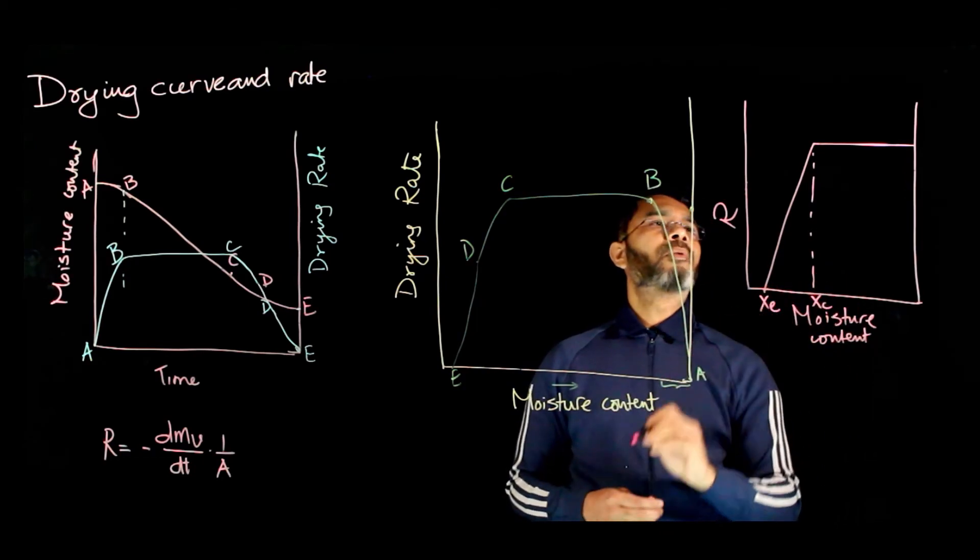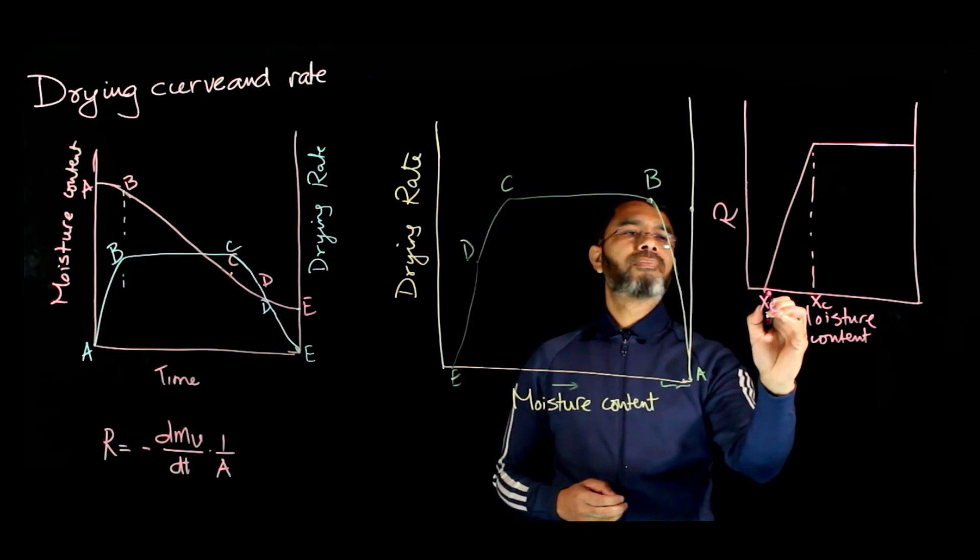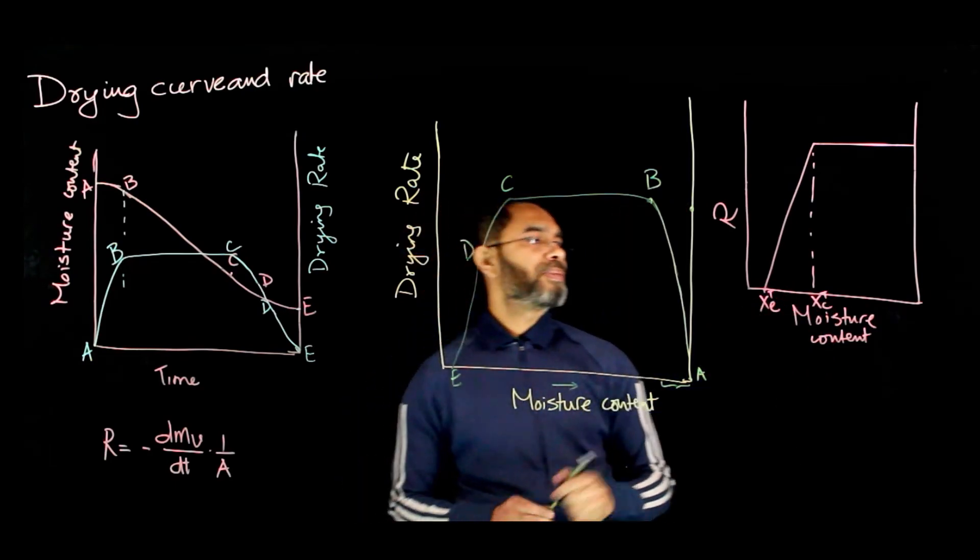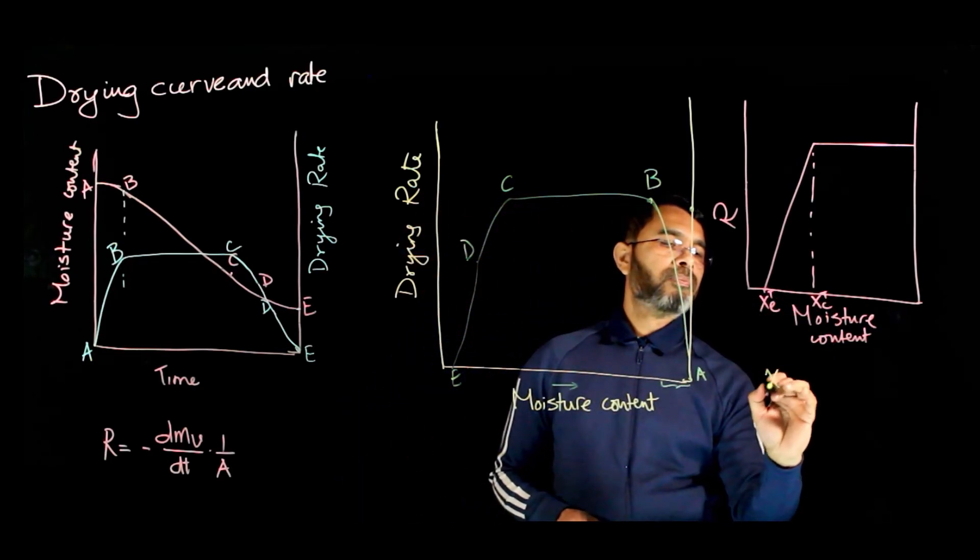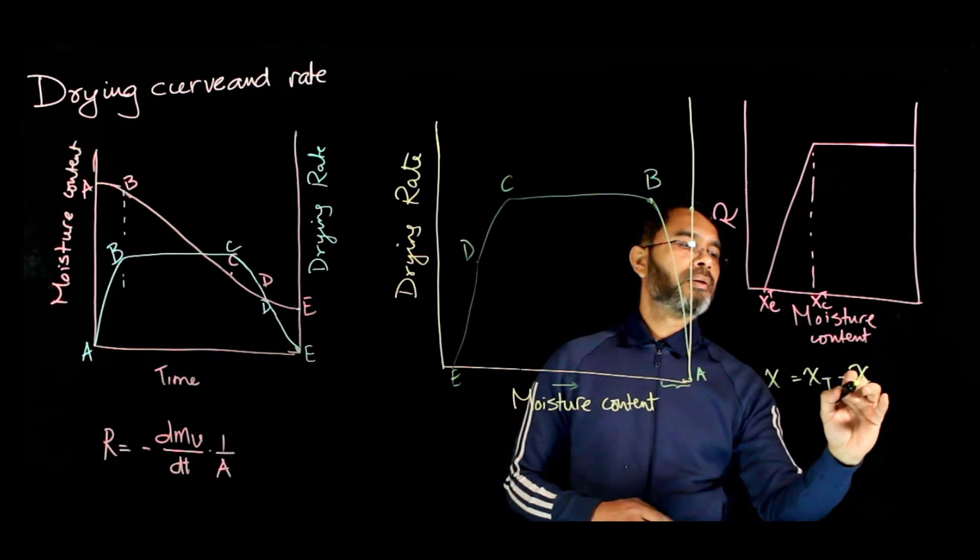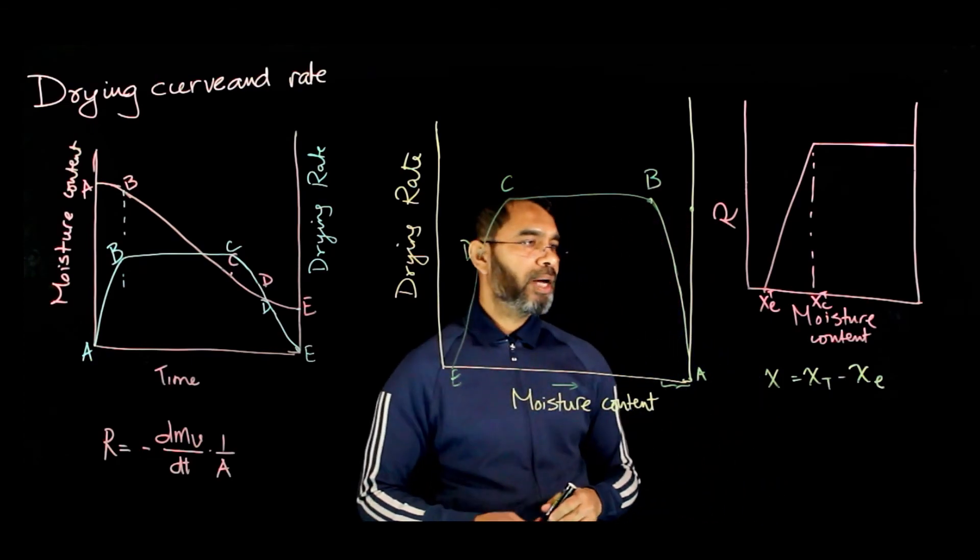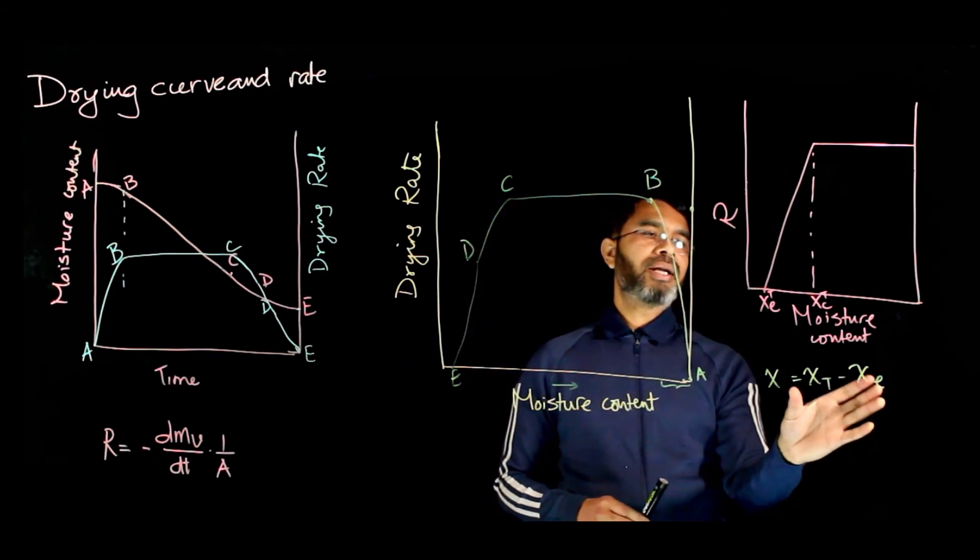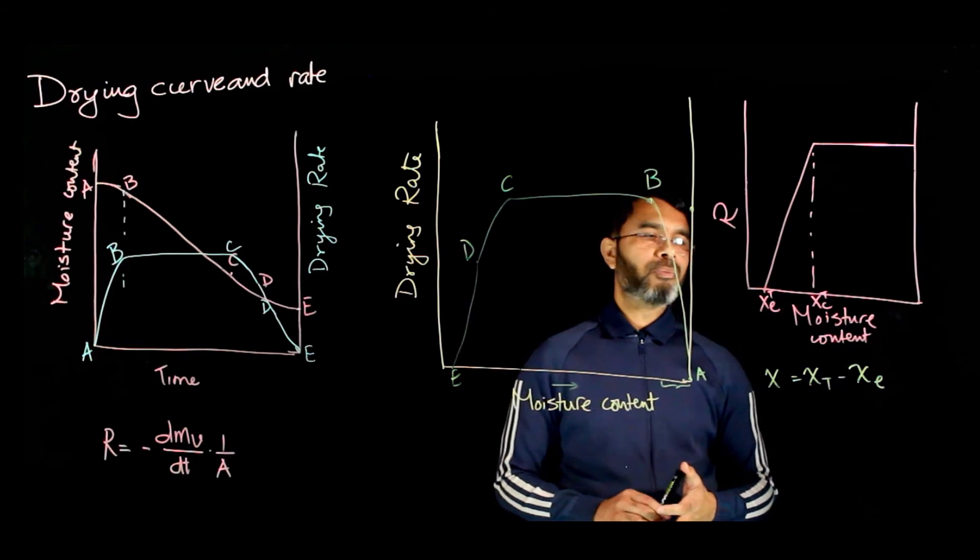This point is called critical moisture content. This is called equilibrium moisture content in terms of total moisture. We've seen the definition of free moisture as X_T minus X_equilibrium. Equilibrium moisture content is the moisture that cannot be removed.